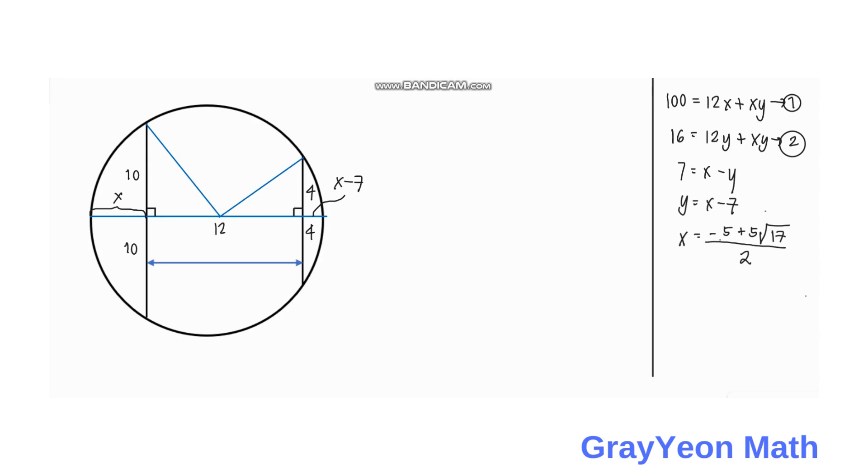Next thing that we have to do is we will now find the radius. The radius of any circle is equal to the diameter over 2. The diameter, if we consider the length that we have here, is simply the sum of these distances, which are X plus 12 plus X minus 7.